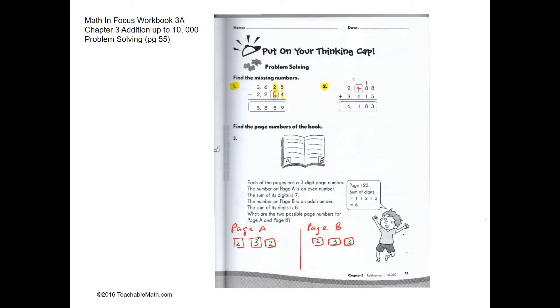Example two over here—this question requires regrouping. So 8 ones and 5 ones will give you 13 ones. One ten and 8 tens plus one more ten will give you 10 tens.